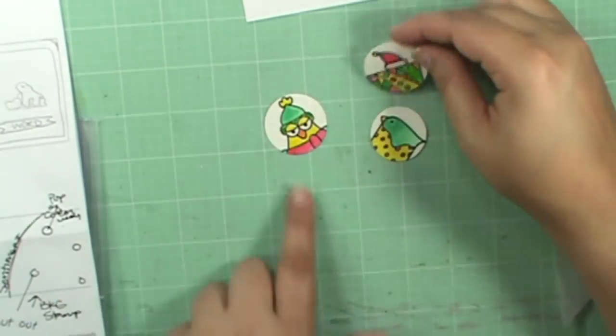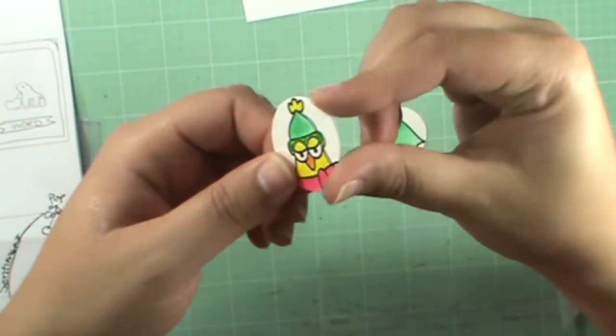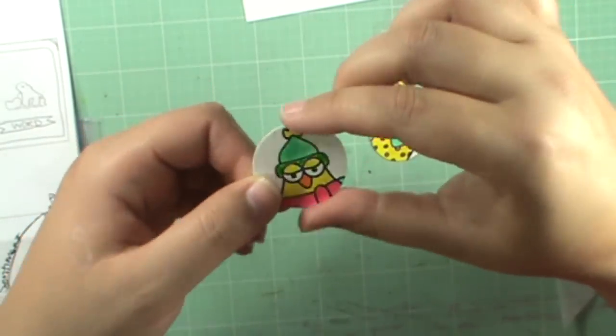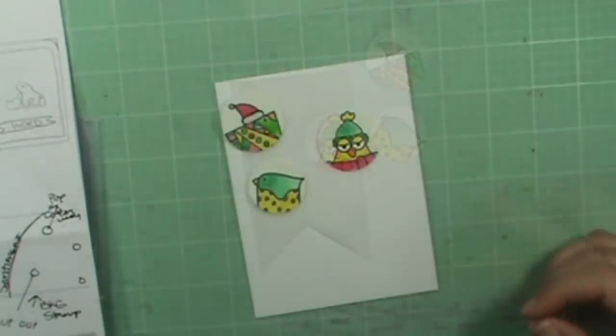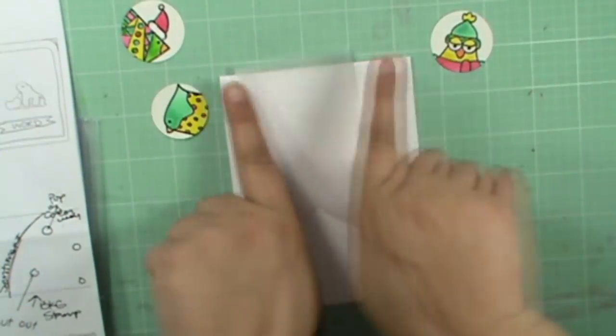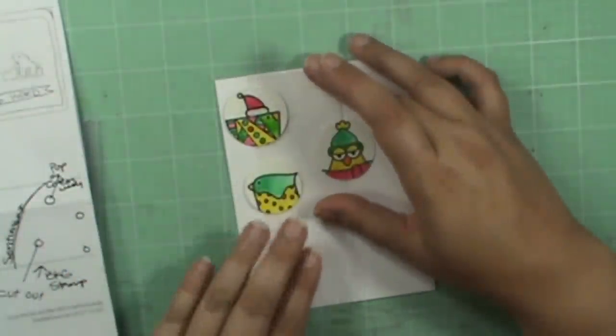You know what I noticed about these watercolors which I really like is it leaves almost like this little sheen, this pearlescent sheen. I absolutely am in love with this. I think the banner might be just a little too wide. I'm actually going to take and just trim it down.